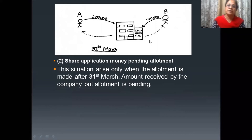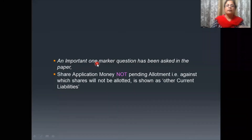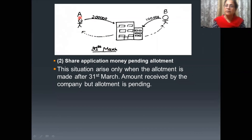Now we will try to understand the meaning of Share Application Money Pending Allotment with the help of an example. For example, there are two persons, Mr. A and Mr. B. Mr. A invests two lakh rupees and Mr. B invests one lakh rupees. Mr. A — whatever amount he invested — since the company issued shares before 31st of March, he got the share certificate proving that he is a company shareholder.